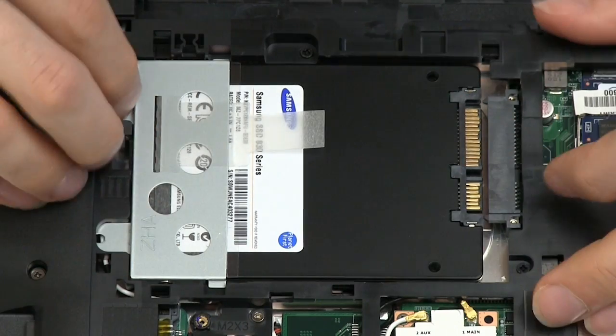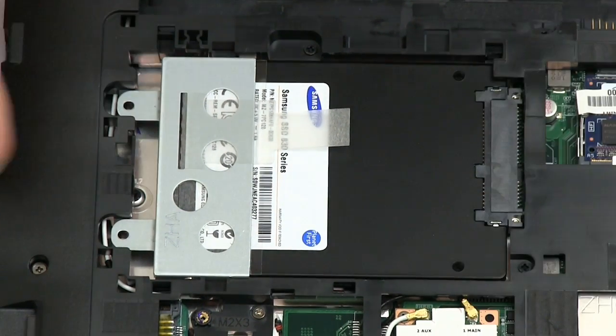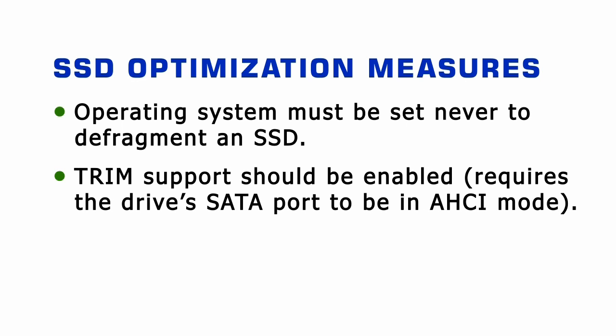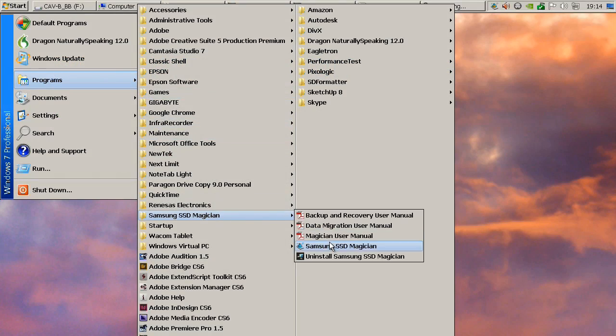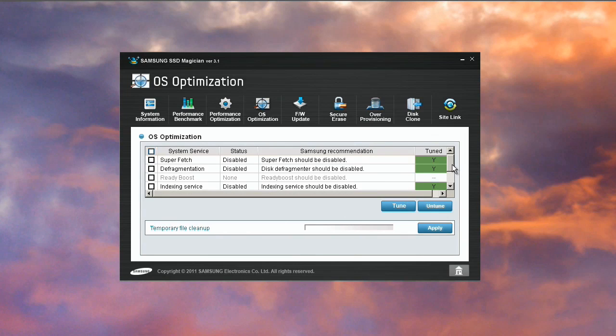While simply replacing a hard disk with an SSD will work, optimal configuration may improve performance and maximise a drive's life expectancy. Most importantly, the operating system must be set never to defragment an SSD, as this will decrease performance by incurring unnecessary data writes. With an SSD fitted, trim support should also be enabled, as this informs the drive when data is either marked for erasure or is no longer valid. Disabling defragmentation and enabling trim should happen by default if you're using an SSD with Windows 7 or Windows 8. Most SSD manufacturers also now supply a free, easy-to-use optimisation utility, such as the SSD Magician software provided by Samsung.